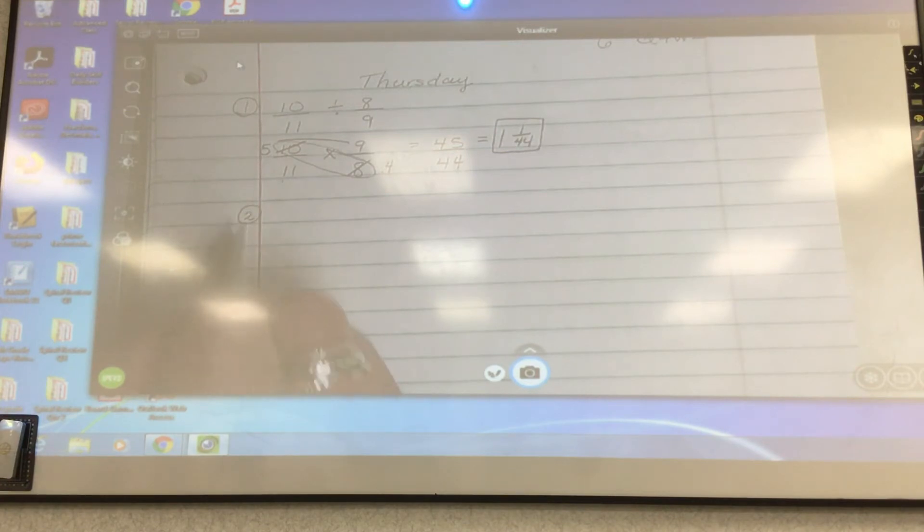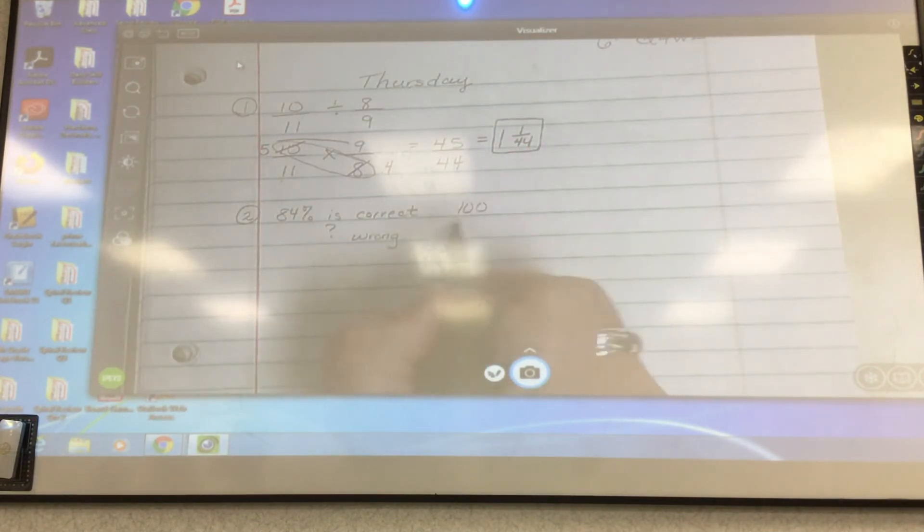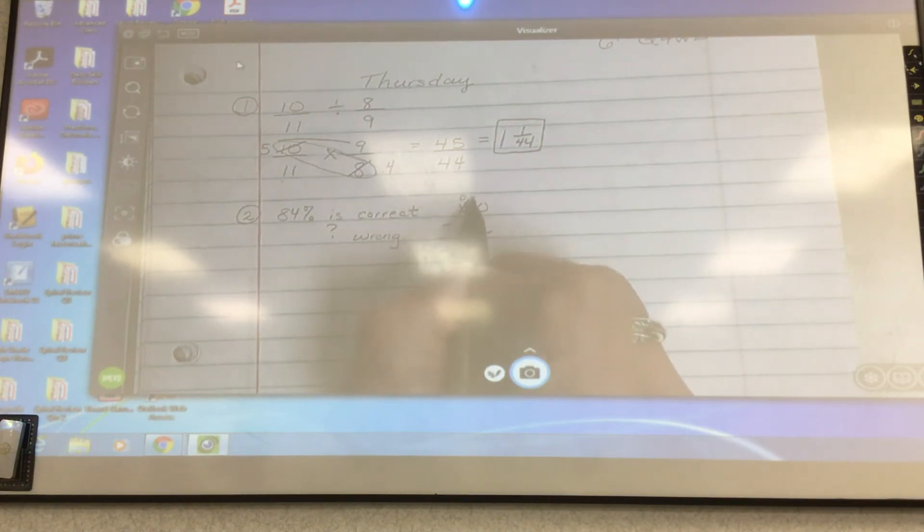Number two. Maria's math test had 25 questions. She got 84% correct. How many problems did she get wrong? There's a couple ways you can do it. You can figure out if 84% is correct, I need to find the percent that is incorrect or wrong. How do I figure out what that percent is? If 84 is correct, what's the most percent that you can get on an assignment? 100. So if 84 is what I got correct, how do I figure out how many I got wrong? You subtract. So I'm going to take 100 minus 84. So I'm going to have to do some work here. And I get 16. So 16% is wrong.